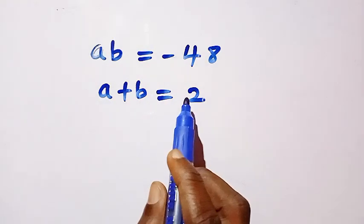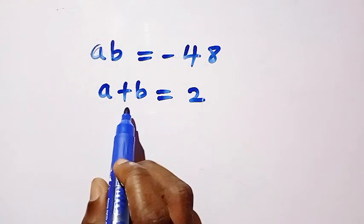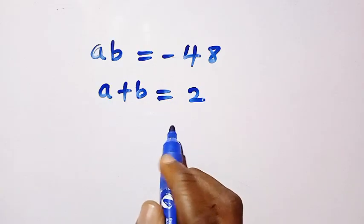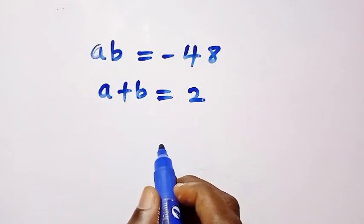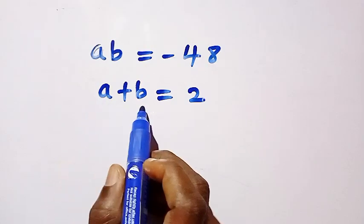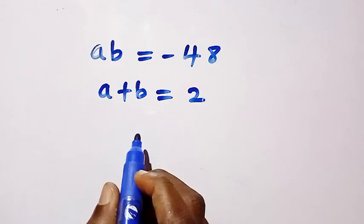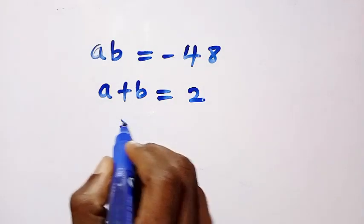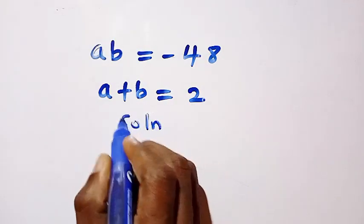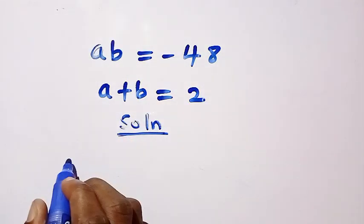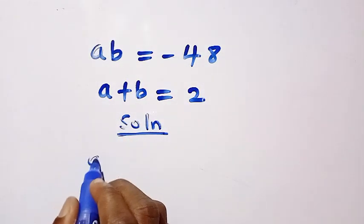Let's see how we can solve this because we need the solution to a and b that will equal 2 and ab equals minus 48. So we start with solution here when we consider equation 2 which says a plus b equals 2.